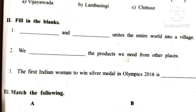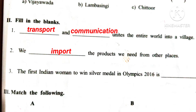Roman number 2: Fill in the blanks. Blank and blank unites the entire world into a village. Answer: Transport and communication. We blank the products we need from other places. Answer: Import. The first Indian woman to win a silver medal at the Olympics 2016 is blank. Answer: PV Sindhu — Pusarla Venkata Sindhu.